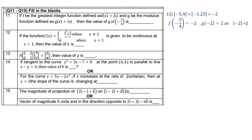Question 12: f(x) = (x² − 1)/(x − 1) when x ≠ 1, and f(x) = k when x = 1, is given to be continuous at x = 1. Find k. We compute the limit as x → 1 of (x² − 1)/(x − 1) = limit of (x + 1) as x → 1 = 2. For continuity, k must equal 2.